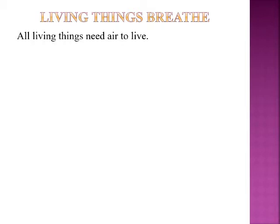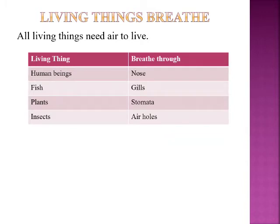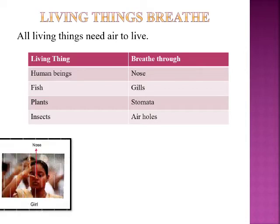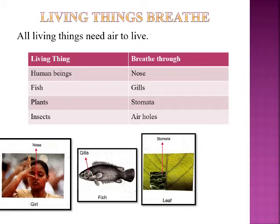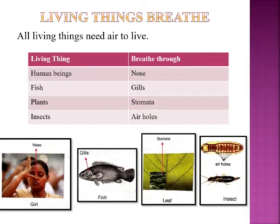Now let us start with the first feature of living things — living things breathe. All living things need air to live. Look at this table. There are a few living things and also their organs to breathe. Human beings breathe through the nose. Fish, which lives in water, breathes through its gills. Plants have leaves with small holes called stomata, and they breathe through stomata. Insects have small holes on their body called spiracles, and they breathe through the spiracles.